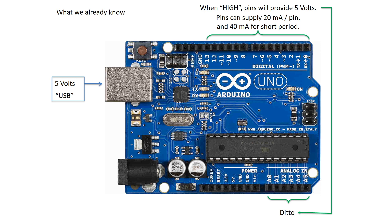We can also supply 200 milliwatts of power for short periods of time, which is the same as 5 volts times 40 milliamps. But what about this barrel jack here on the left, and the power pins down here — what are they for and what are their limitations? We'll get into that next. In the next few slides, I'll speak strictly in the context of voltage and current limitations. Keep in mind that if you want to know the associated power ratings, you can calculate these through the power equation.